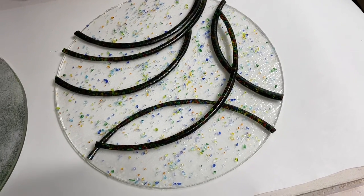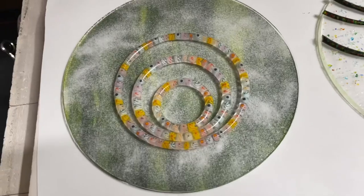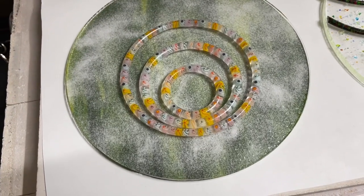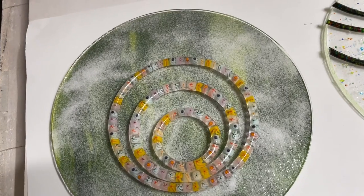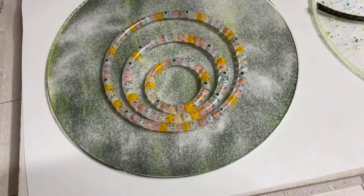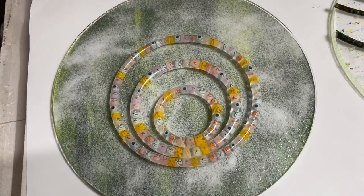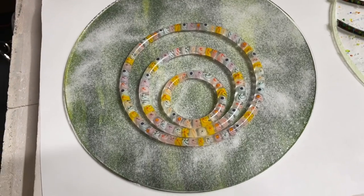And then this one, I cut a really cool piece of yellow and green streaky for underneath, put some clear powder in between, and then capped it with clear and put my rings.